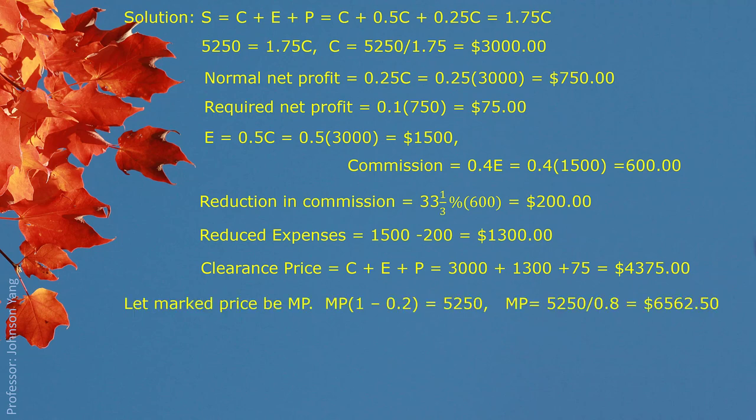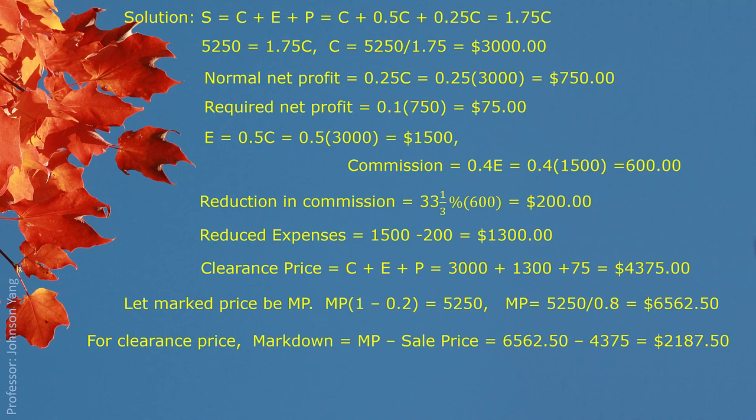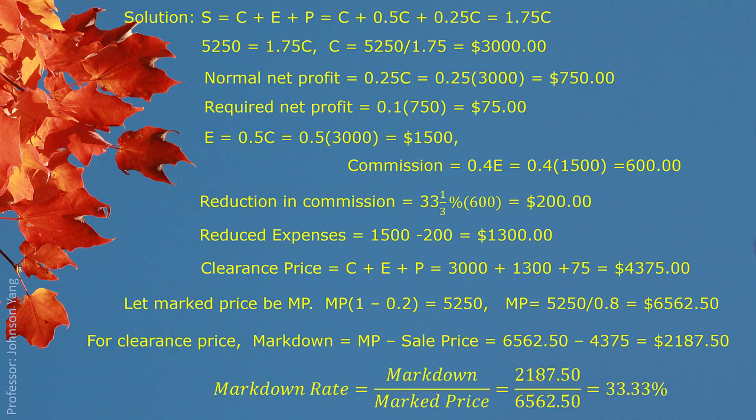The markdown rate based on marked price = $2,187.50 / $6,562.50 = exactly one-third (33.33%). So instead of regularly advertising 20% off, for this seasonal clearance sale they can advertise one-third off to customers. See you next time.